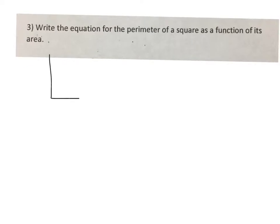So normally a square is a function of its side length. Perimeter is found by adding up all four sides, so x plus x plus x plus x is 4x.